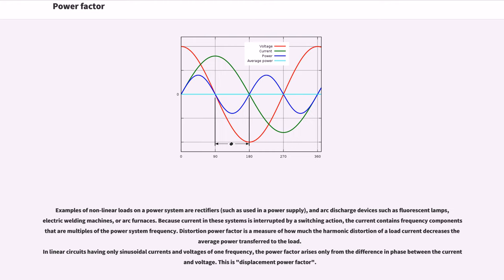Examples of non-linear loads on a power system are rectifiers and arc discharge devices such as fluorescent lamps, electric welding machines, or arc furnaces. Because current in these systems is interrupted by a switching action, the current contains frequency components that are multiples of the power system frequency. Distortion power factor is a measure of how much the harmonic distortion of a load current decreases the average power transferred to the load. In linear circuits having only sinusoidal currents and voltages of one frequency, the power factor arises only from the difference in phase between the current and voltage — this is displacement power factor.